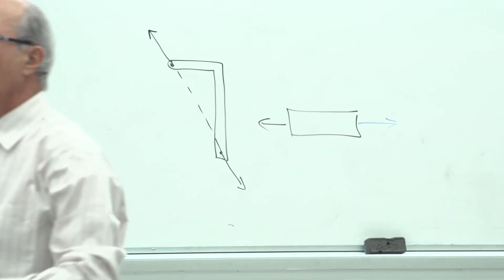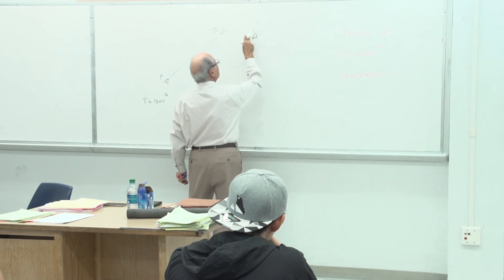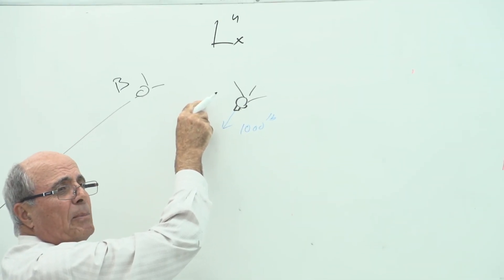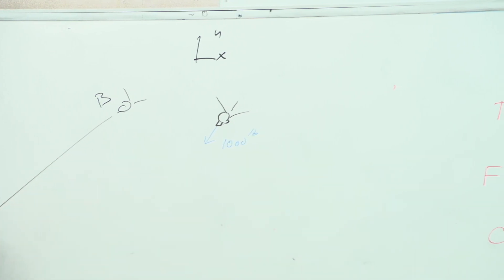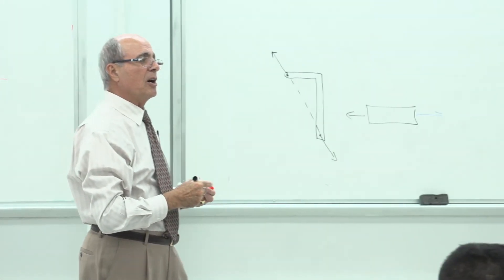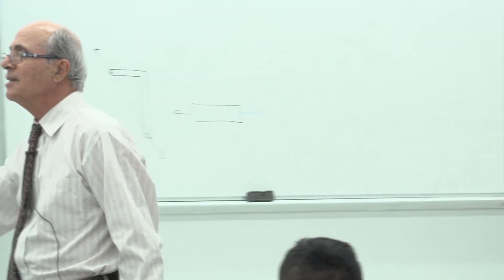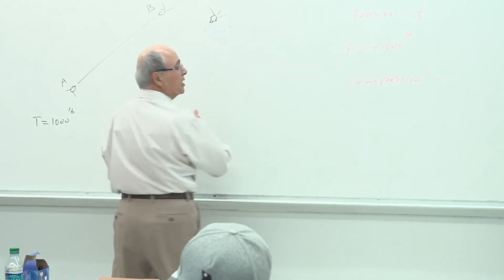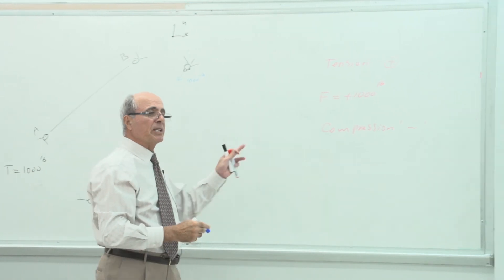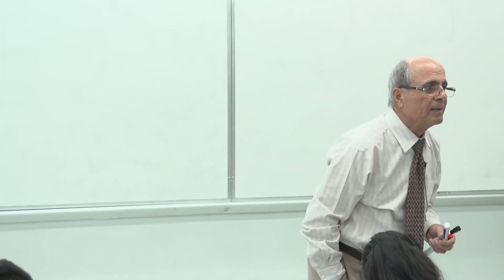Look at the forces — this one has a negative x-component and negative y-component, and this one has a positive x-component, but together they show the member is in tension. The rule: anytime the forces at the joint go away from the joint, the member is in tension. Write that down. When forces go away from the joint, the member connecting those joints is in tension.